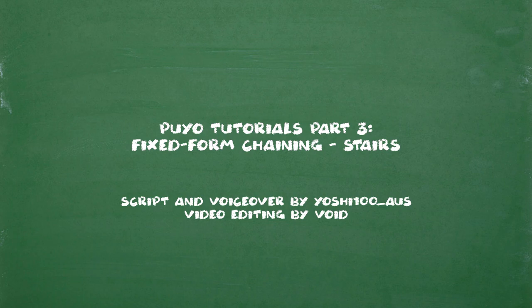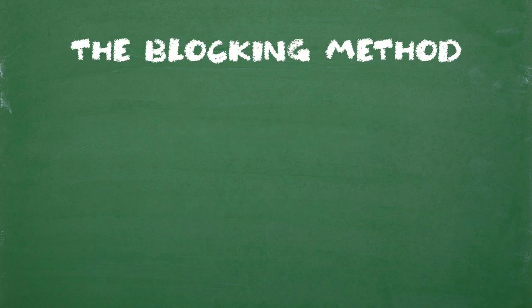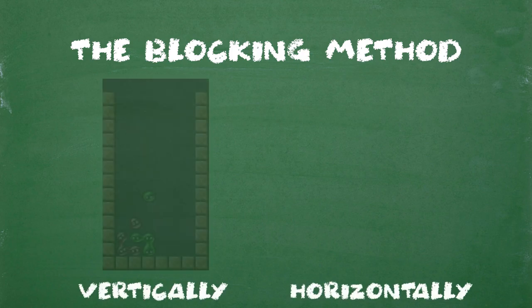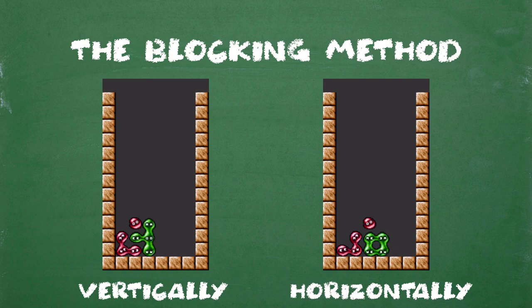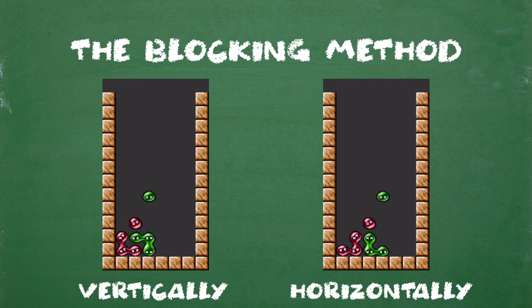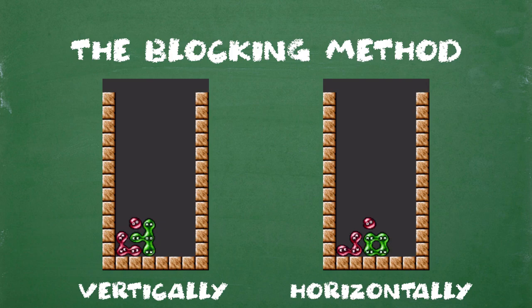The one we'll be tackling this time is stairs. Before we get into this, let's quickly revise the blocking method. Last time, we noted that you can block vertically and horizontally. However, what remained constant was the fact that we made sure to make groups of 3 and only had to place 1 key Puyo. We can change this up though, and a good way to visualize it is with horizontal blocking, or formerly known as stairs shape.